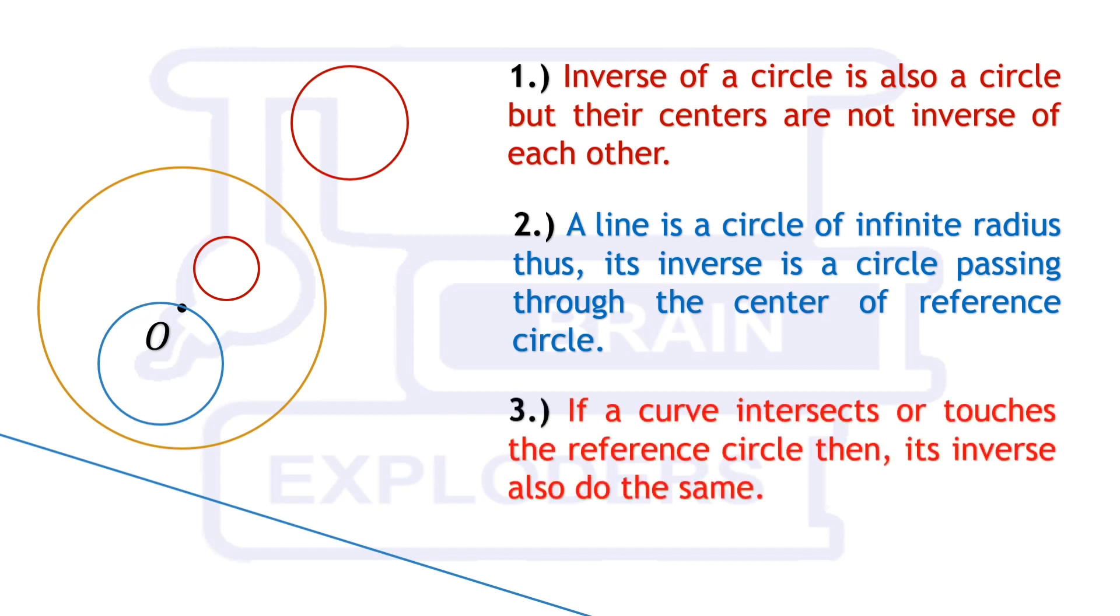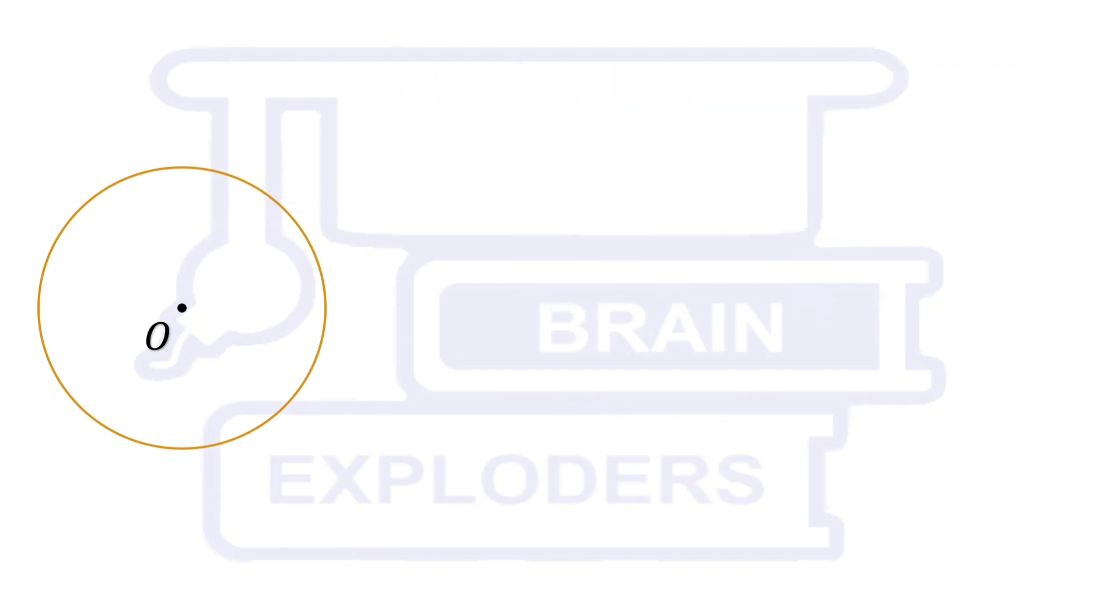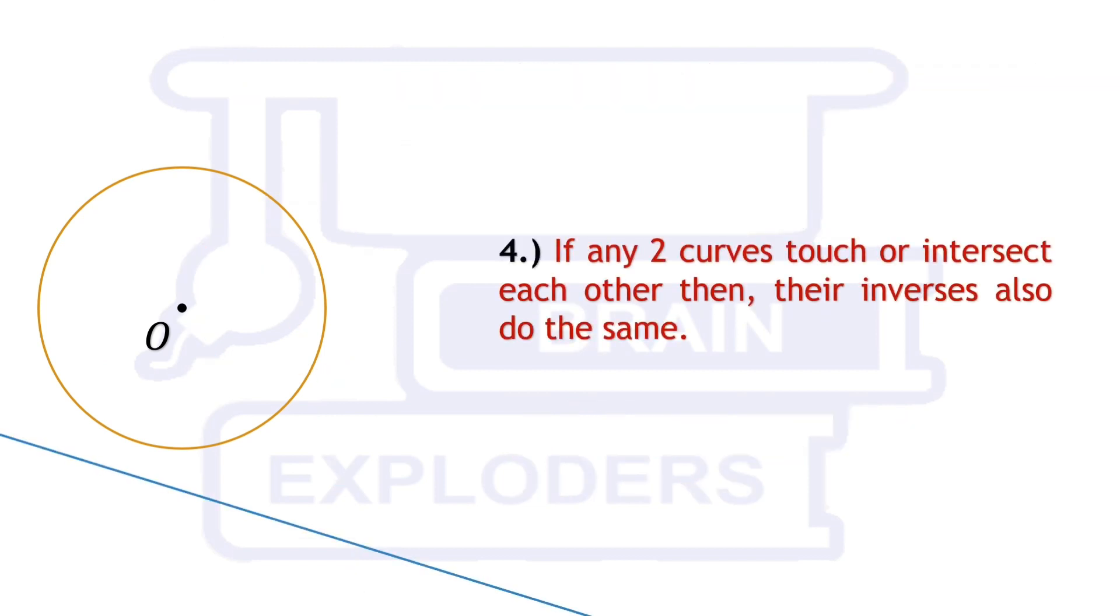If any curve touches or intersects reference circle its inverse also touches or intersects the reference circle. Moreover, if any two curves touch or intersect each other then their inverses also do the same with each other. You can see that brown circle touches the light blue line and its inverse is also touching the inverse of this blue line.